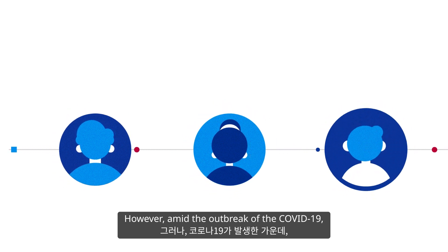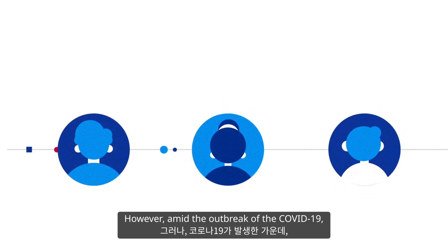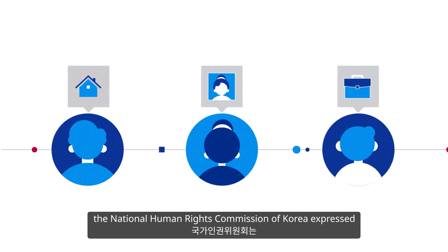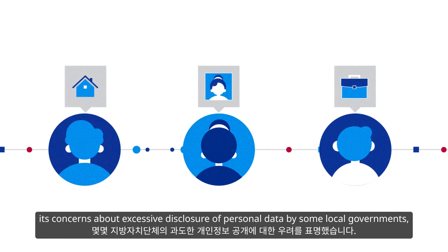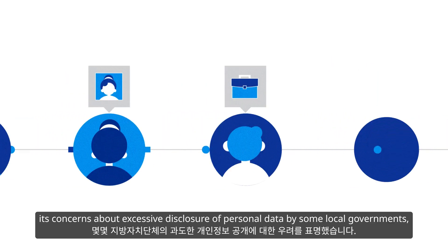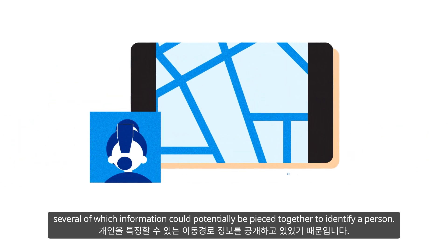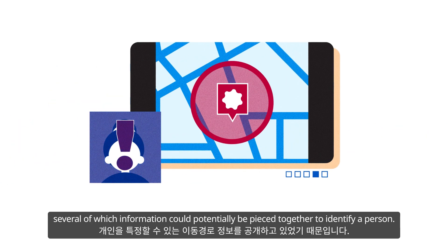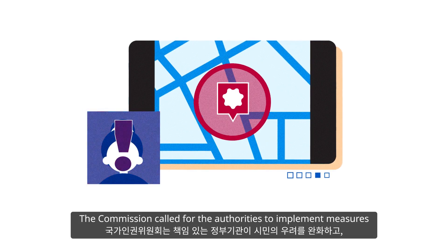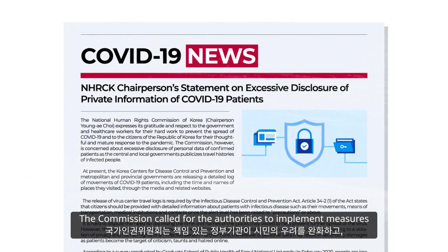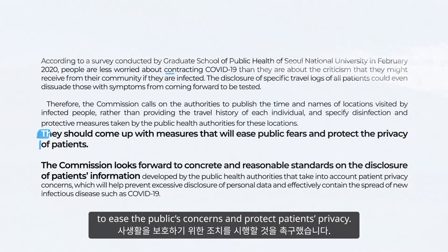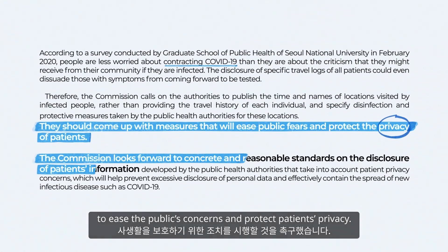However, amid the outbreak of COVID-19, the National Human Rights Commission of Korea expressed its concerns about excessive disclosure of personal data by some local governments, several pieces of which information could potentially be pieced together to identify a person. The Commission called for the authorities to implement measures to ease the public's concerns and protect patients' privacy.